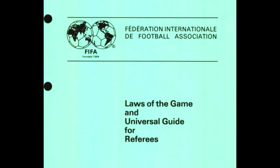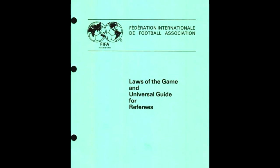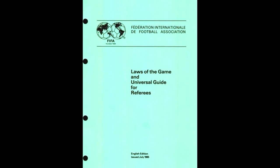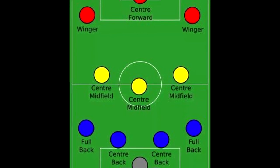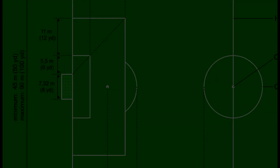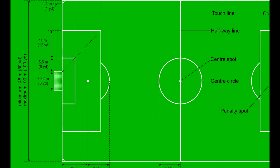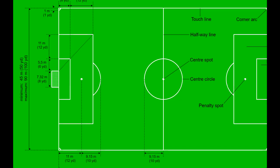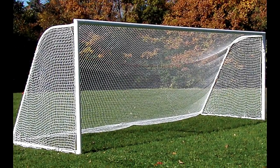Soccer is governed by a set of rules known as the laws of the game, first established in 1863 and continually updated ever since. Soccer is a team sport, with 11 players from each team on the field at once. These teams will compete with a round soccer ball or football. The field itself, or pitch, is a rectangular flat field with two boxes on either side filled with a net. This box is known as the goal.